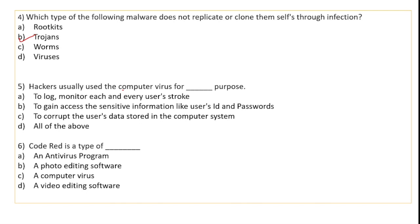Hackers usually use computer viruses for what purpose? The options are: to log and monitor each user's activity; to gain sensitive information like user IDs and passwords; to corrupt the user's data stored in the computer system. Computer viruses can perform all of these activities, so the correct option is D — all of the above.